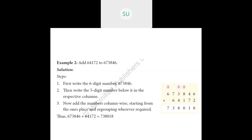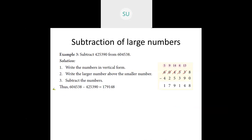Then we have subtraction of large numbers. Here they have told us to subtract 4,25,390 from 6,45,000. Write the numbers in vertical form, but first check which is the greater number. Here 6,45,000 is greater, so write that number first, then the smaller number below it. The larger number is called the minuend, the smaller number is called the subtrahend, and the answer is called the difference.